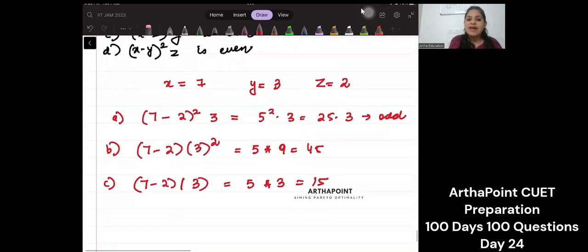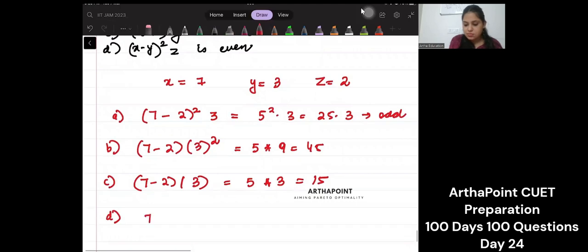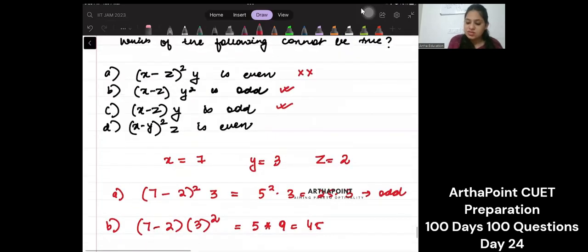(x-y)² times z: this is 4 whole square into 2, 16 into 2. This is even. This is correct.